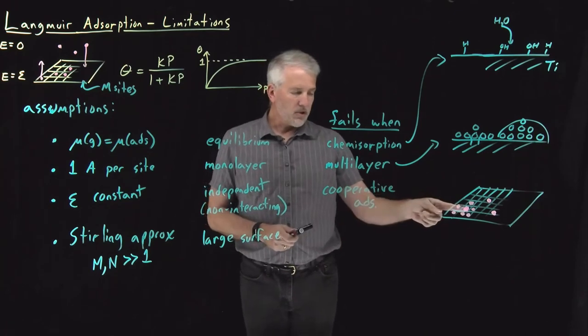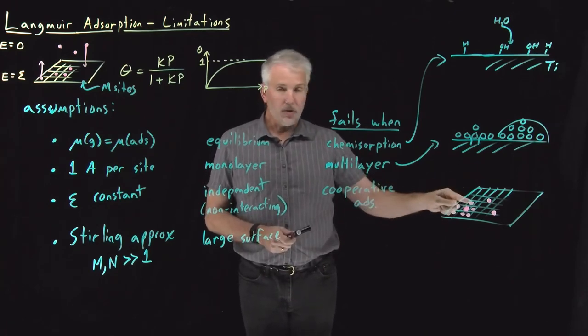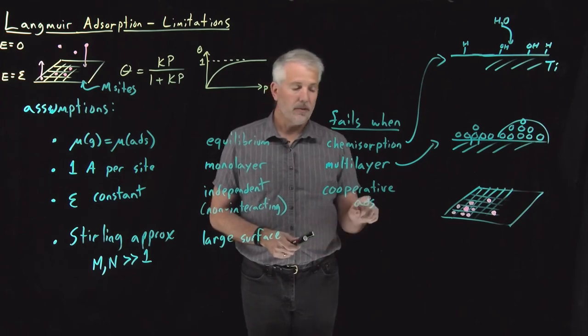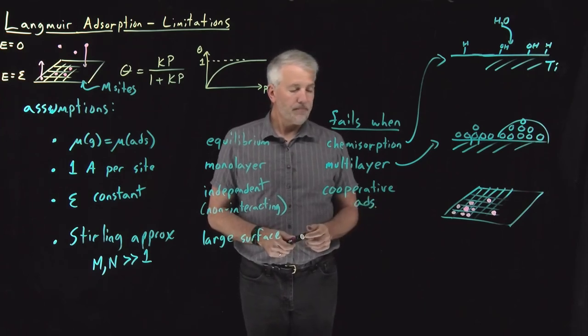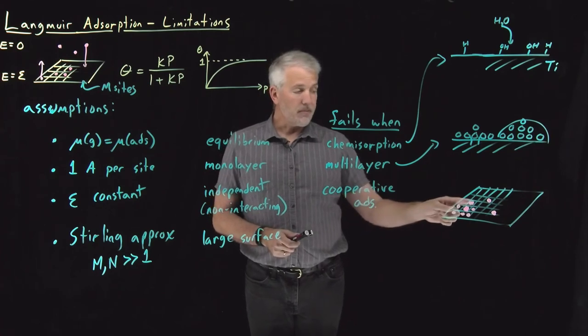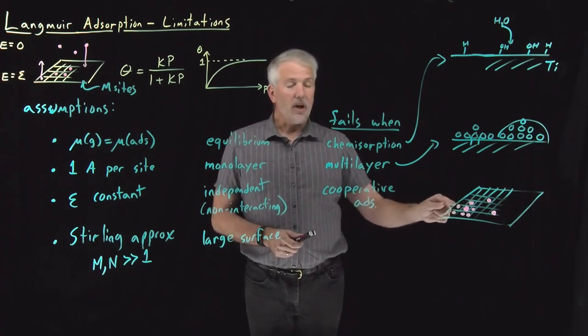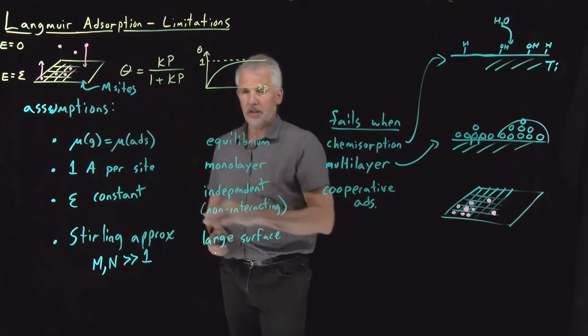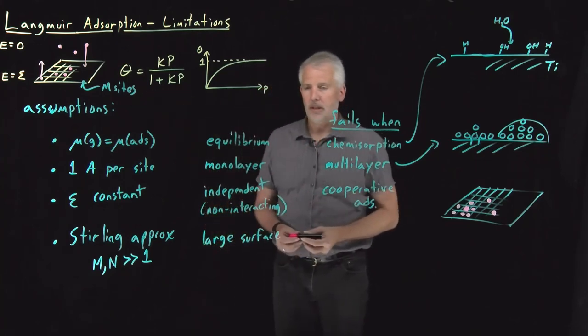So one molecule adsorbing helps another molecule adsorb nearby and makes it happen with a higher probability because of that cooperative adsorption phenomenon. You can also have an anti-cooperative bonding if these molecules have an unfavorable interaction energy. In either one of those cases, again, the Langmuir isotherm model won't necessarily be very accurate.